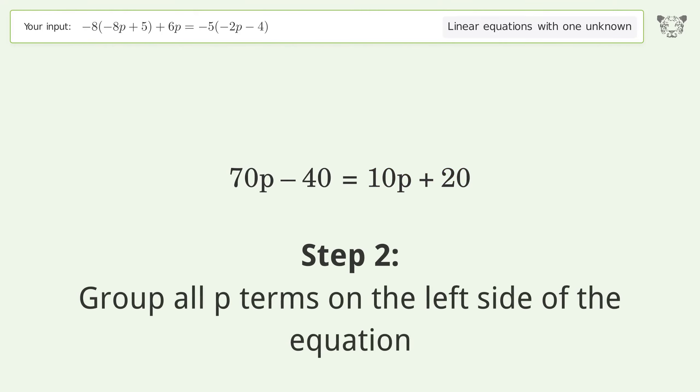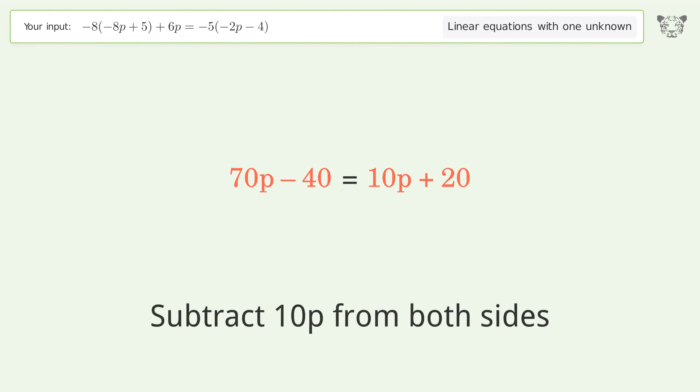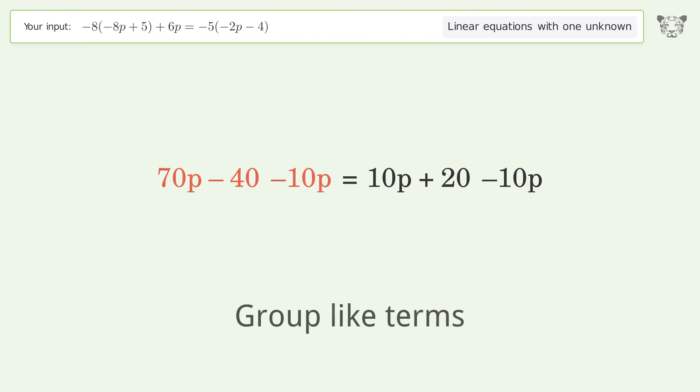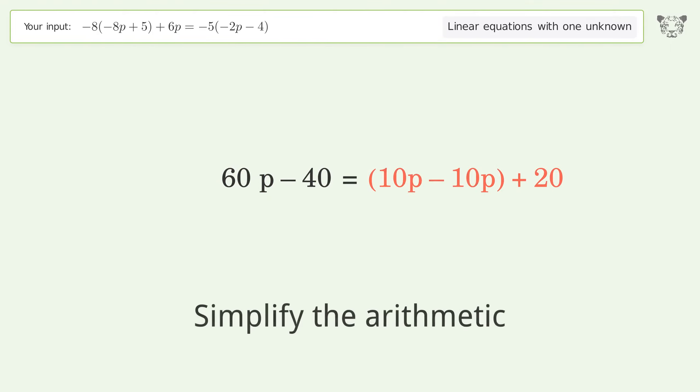Group all p terms on the left side of the equation. Subtract 10p from both sides. Group like terms. Simplify the arithmetic. Group like terms. Simplify the arithmetic.